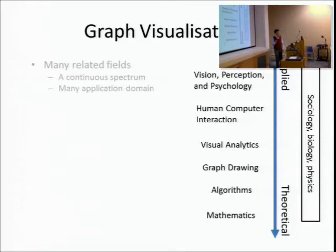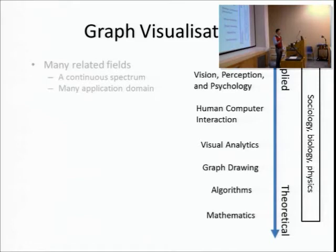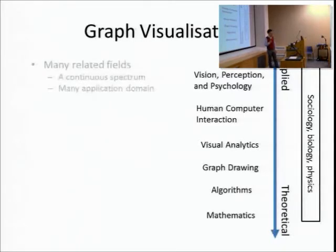More recently, there's lots of work in biology using networks, something they refer to as systems biology - trying to understand the human body as a system connected by many different components at different levels, from organs down to DNA, and how they work together as a network. Physics also has lots of work, looking at fundamental theory about graphs.